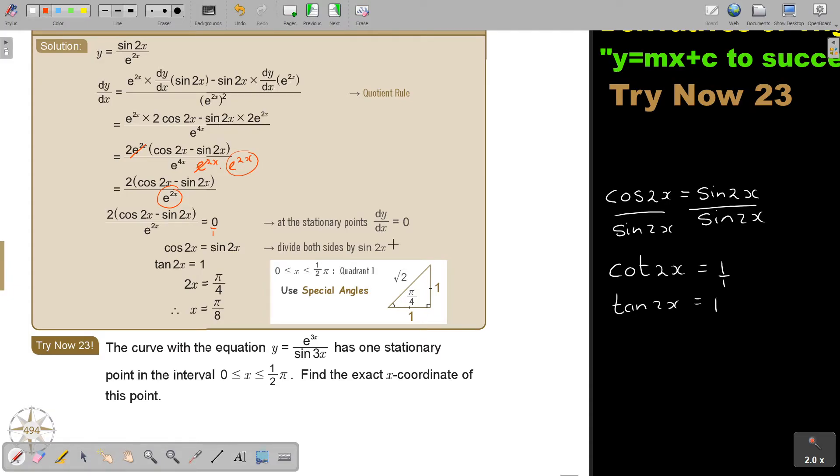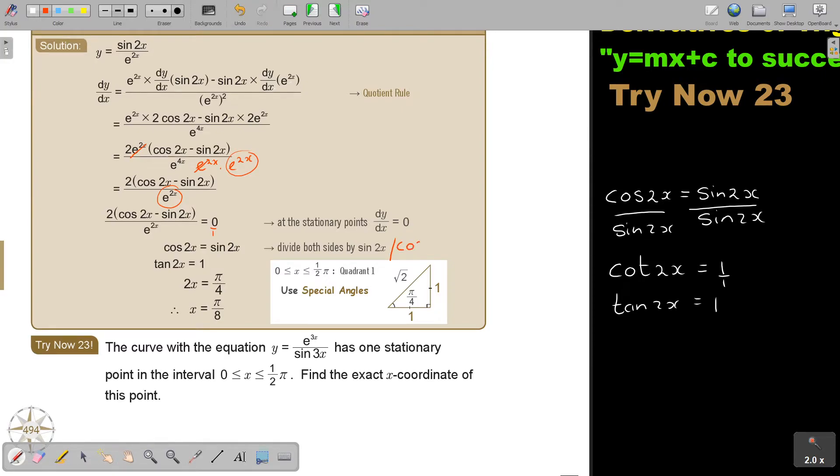But I think it would have been better if I rather say divide by cos 2X. Always try to go directly to tan, because if you were doing that, then you would have said, divide by cos 2X. And then you would have skipped this step, and you would have directly go into 1 equals tan 2X. So rather always try to go directly to tan.